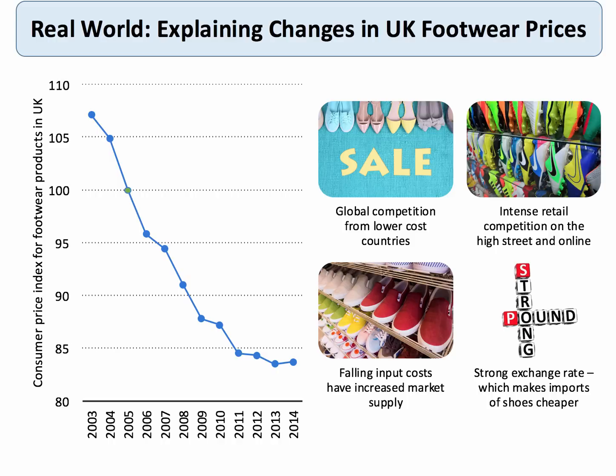We've also seen intense retail competition on the high street, particularly in the deep discount sports sector, such as Sports Direct and JJB Sports. And of course, increasingly people can buy online. The cost of inputs might have fallen — for example, the cost of leather or the cost of manufacturing might have gone down, increasing supply. And it could well be the case that a relatively strong exchange rate also makes imports cheaper. So a combination of supply and demand factors is causing footwear prices to fall.